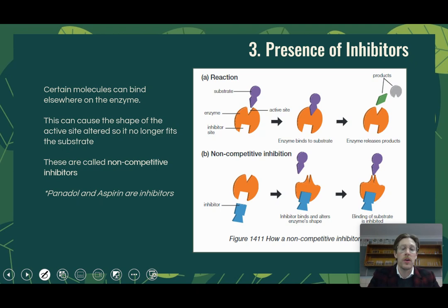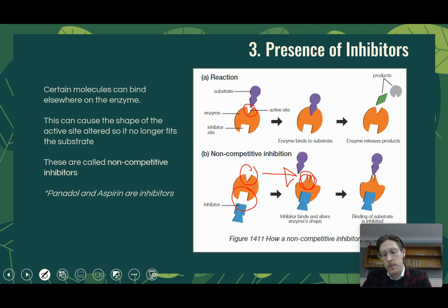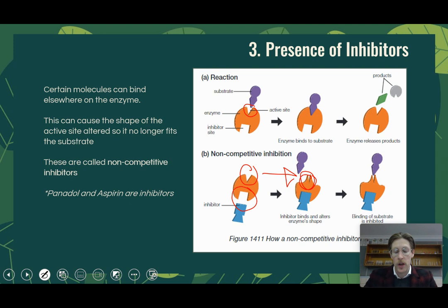Another type of inhibitor does not block the active site directly but binds to a different part of the enzyme, forcing the shape to change. Enzymes are complex proteins with multiple parts. The active site is the key part, but other parts of the enzyme can be bound by other molecules, causing a temporary deformation of shape that prevents the substrate from binding. This is a temporary measure and not permanent. The presence of inhibitors will temporarily lower or completely stop the rate of reaction, but only for a period of time.